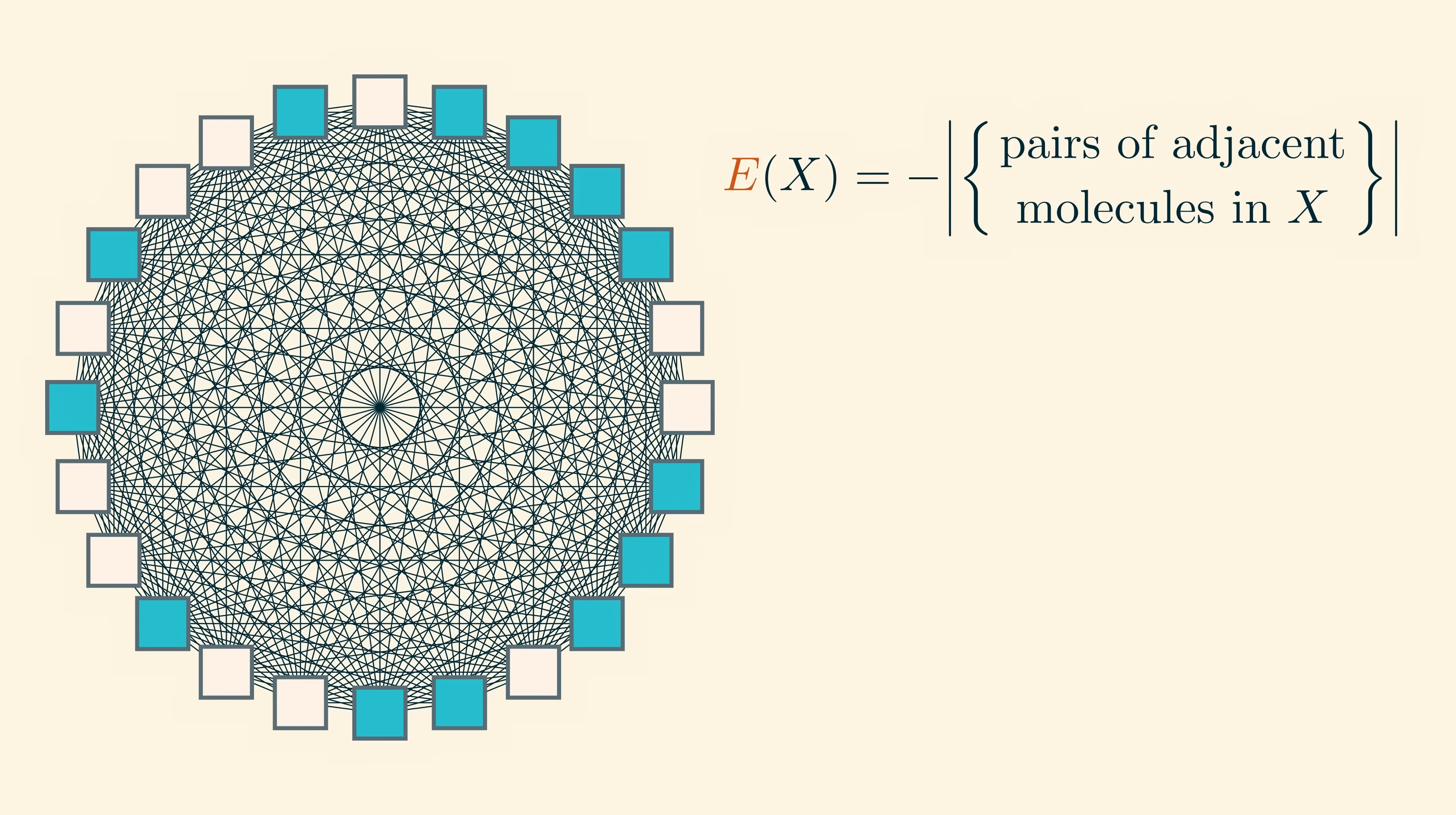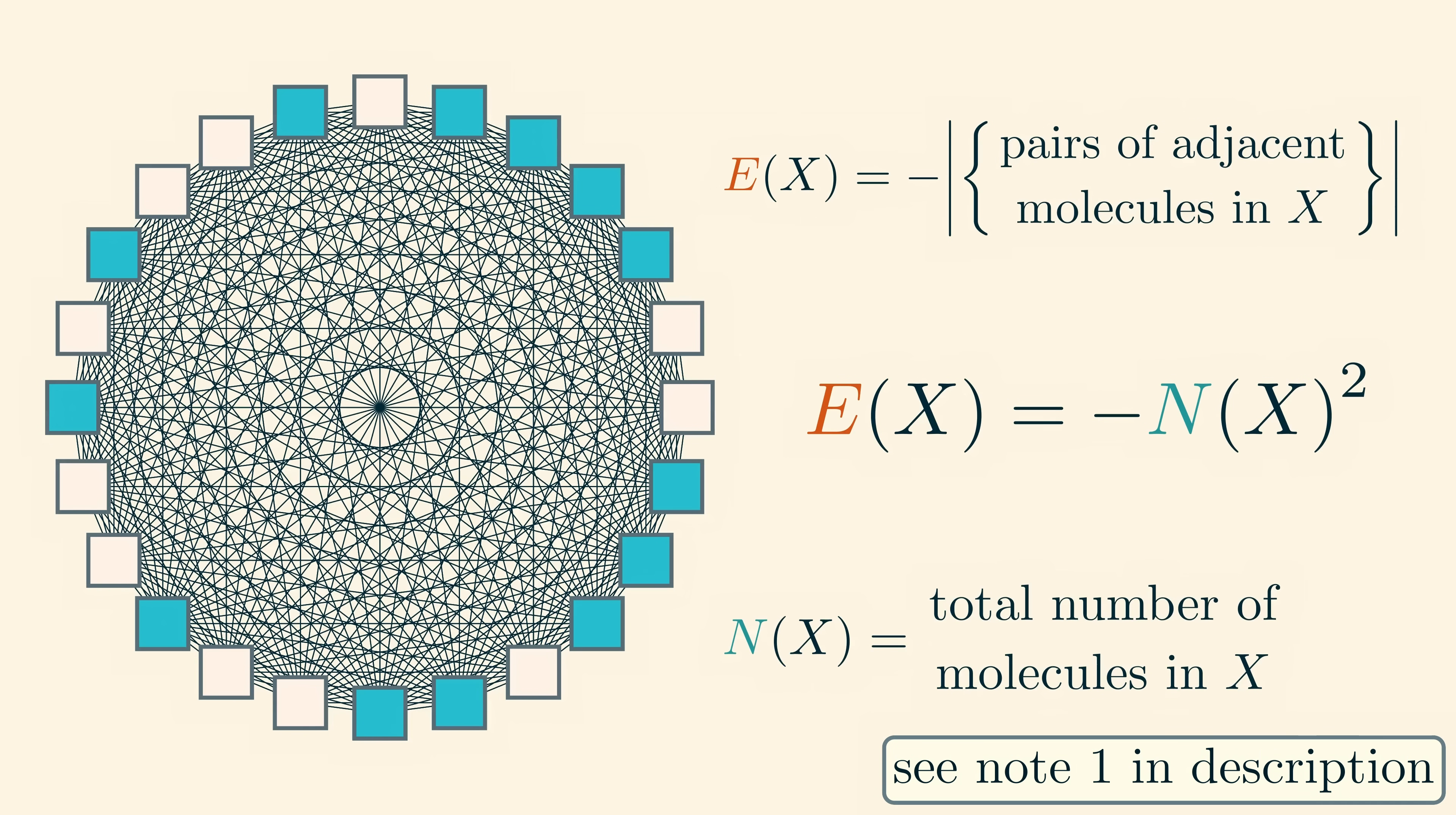The nice thing about this is that we can actually write the energy in terms of the number of molecules directly, since every molecule is next to every other molecule. So the energy is just minus one times the total number of pairs of molecules, which is the number of molecules n in the microstate x, all squared. There is one more thing we need to do though. This change actually increases the magnitude of the energy by a lot, and we need to correct that.